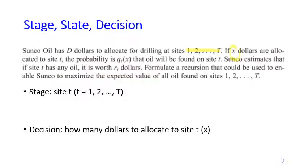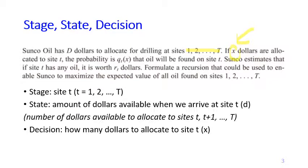Now what is the state? Remember that if your decision is how much you would like to spend, to make a reasonable decision you should know how much you have on hand, because it is not wise to spend more than what you have. So the state is the amount of dollars available when we arrive at site T, denoted by small d. Equivalently, it is the amount of dollars available to allocate to sites T, T+1, up to big T.